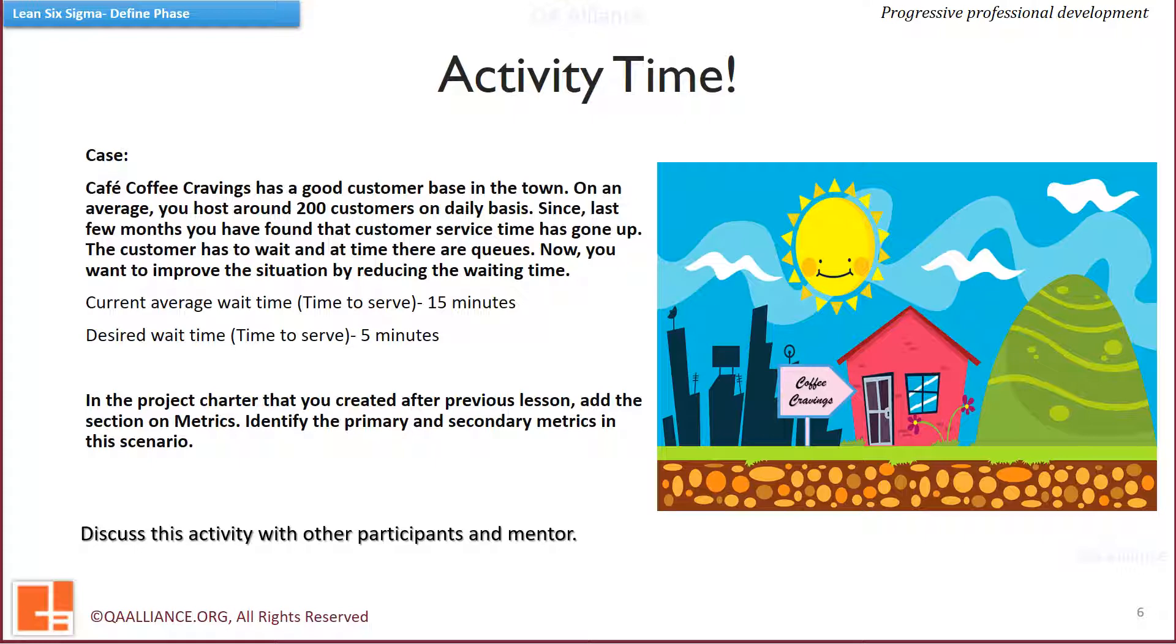Below is some figures for your reference. Current average wait time is 15 minutes while desired wait time is 5 minutes. In the project charter that you created after previous lesson, add the section on metrics. Identify the primary and secondary metrics in this scenario. Think of the y and x's that you had identified earlier. Link all those dots and identify the suitable metrics which will help you in the improvement project.